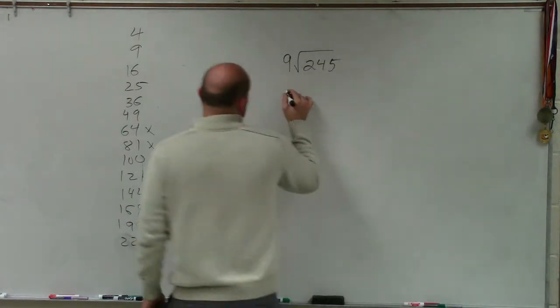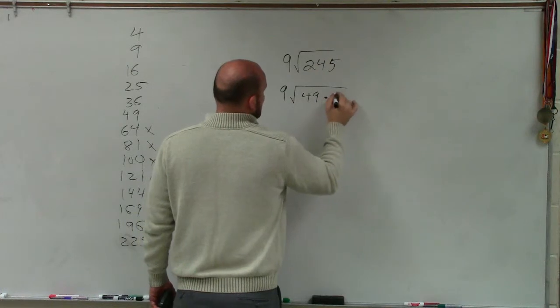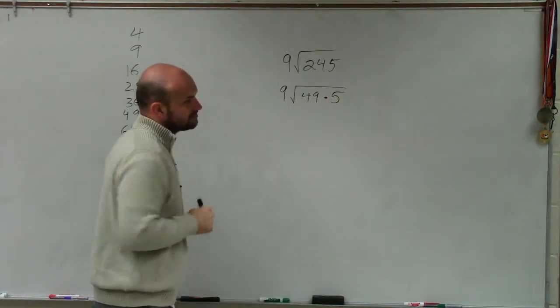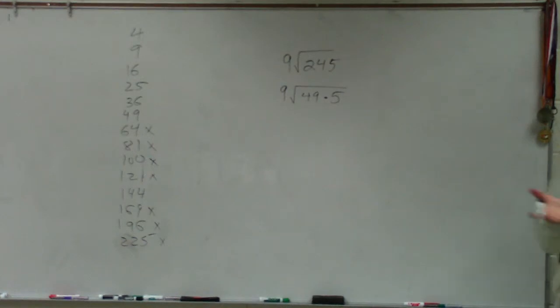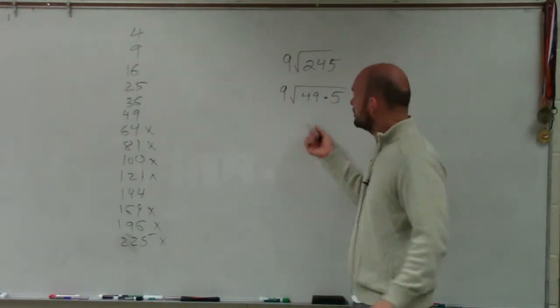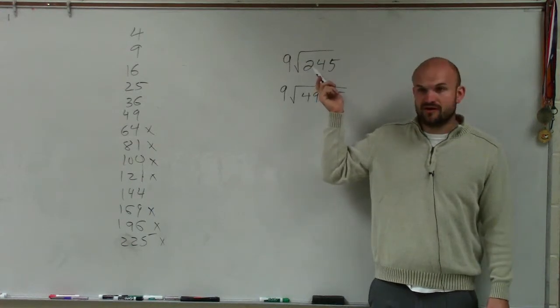So I have 9 times 49 times 5. Does everybody see that? So you always want to start from the largest number going down to the smallest. So do you guys agree with me that 49 times 5 is the same thing as 245? Yes.